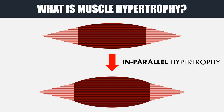Hypertrophy can occur in both parallel and in series. In parallel hypertrophy is when the muscle fibres grow in diameter, essentially making the muscle thicker. This is the most prevalent form of hypertrophy and what most people seek to achieve with their training.